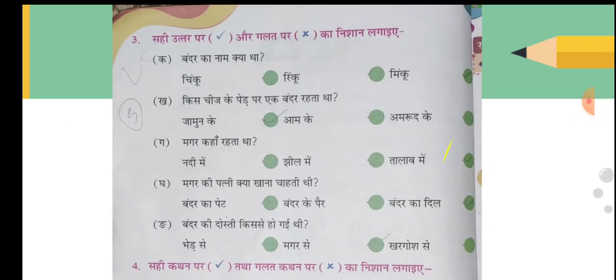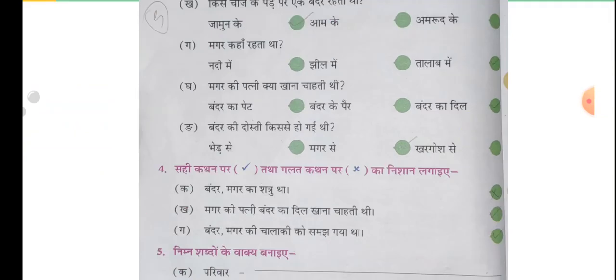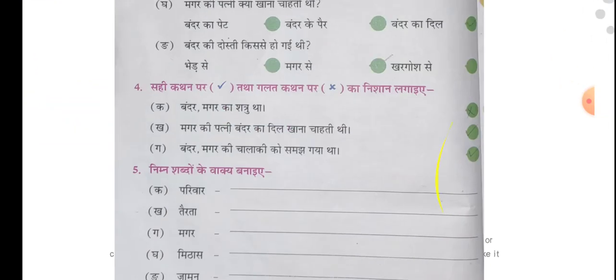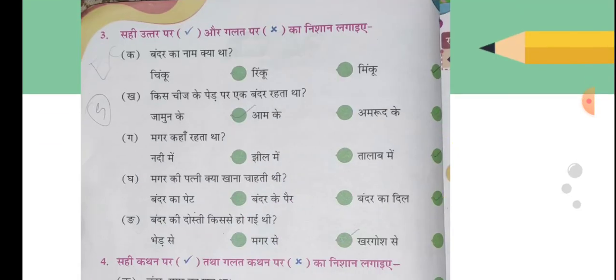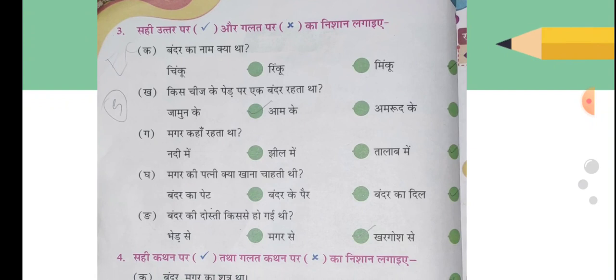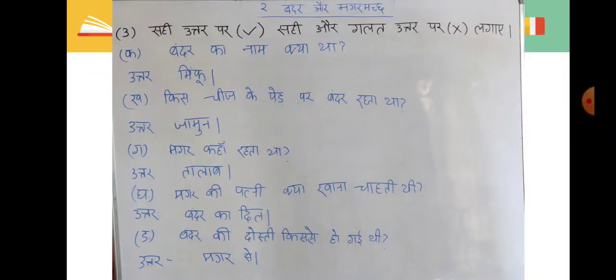यह है आपका — प्रिष्ट नंबर बारह। इसमें से आपको सही उत्तर सेलेक्ट करके उस पर सही का निशान लगाना है। बंदर का नाम क्या था? बंदर का नाम मिंकू था। किस चीज के पेड़ पर बंदर रहता था? उत्तर है — जामुन के पेड़ पर रहता था।